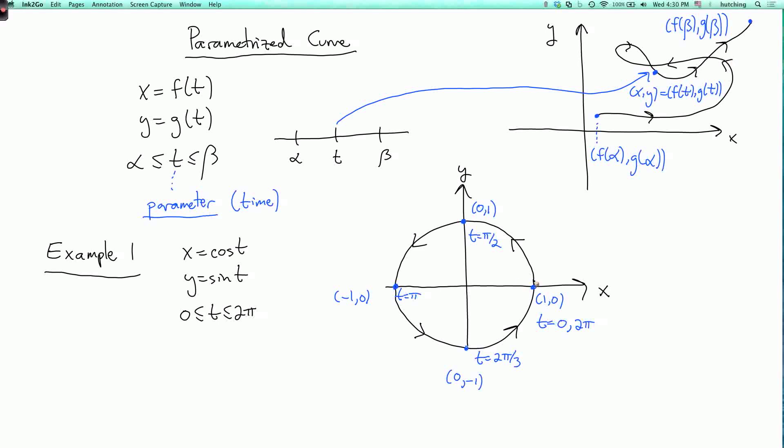So the arrow indicates that as t increases, you move along the curve in the direction of the arrow. So this curve is the unit circle. And we're going around it counterclockwise. And also at unit speed.